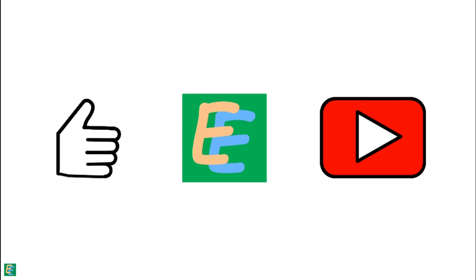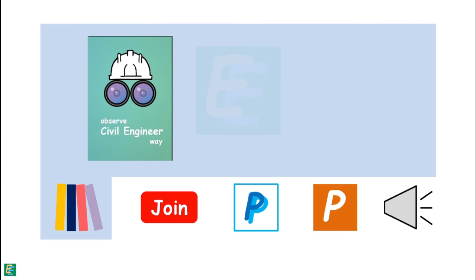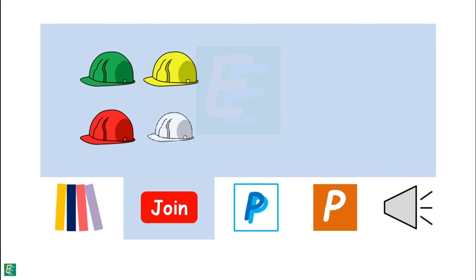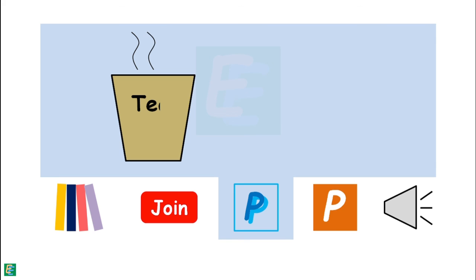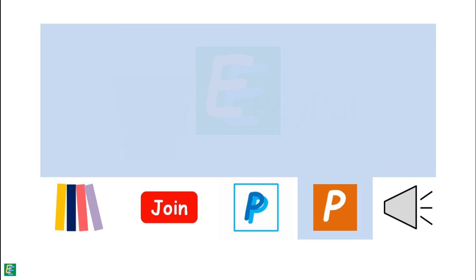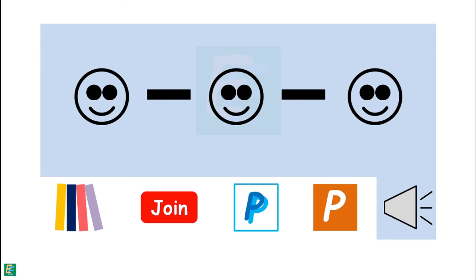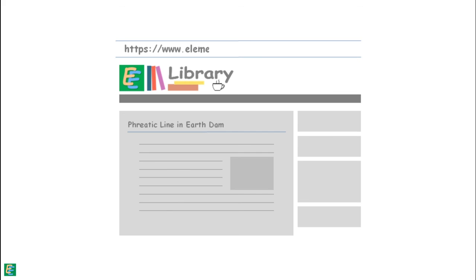If you like Elementary Engineering videos, you may support the channel in multiple ways: you can buy Elementary Engineering handmade diaries, become a channel member on YouTube, buy Elementary Engineering a cup of tea, or become a patron on Patreon. You can also simply spread the word about Elementary Engineering. Read more about the shape of the phreatic line in an earth dam without filter at the Elementary Engineering library website. All links are in the description.